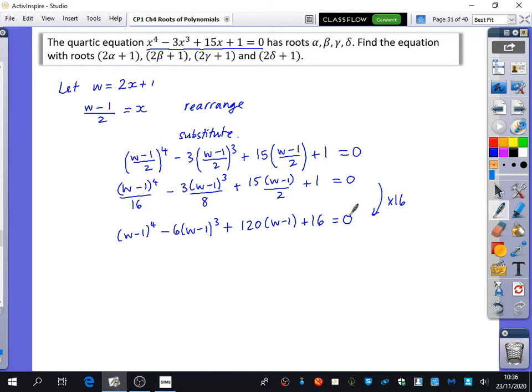Now this is a lot easier to do. You're going to do binomial expansion on this. Do you know the coefficients for binomial for the 4? 1, 4, 6, 4, 1. Good. You could do a quick Pascal's triangle if you wanted to, or you could use your calculator. I often just think of the Pascal's triangle in my head. So it's going to be 1, 4, 6, 4, 1 for this bit. It's going to be w⁴ - 4w³ + 6w² - 4w + 1.